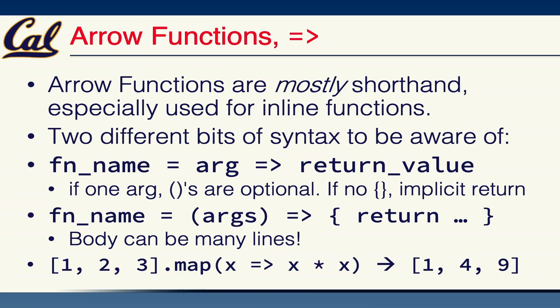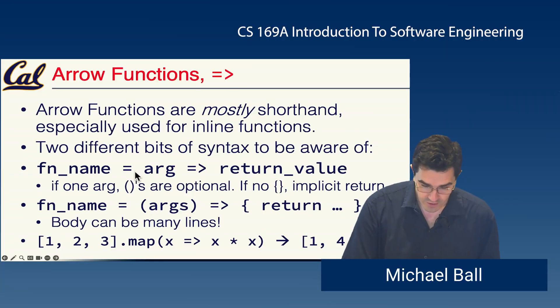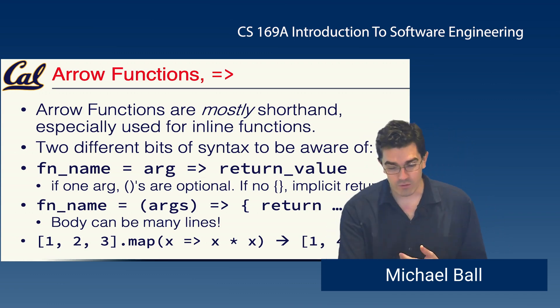Arrow functions in JavaScript are mostly shorthand and they're especially used for inline functions. You'll see lots of places where people now use arrow functions as the default, but there's a few different ways of writing them and there's one sort of big catch to arrow functions that is worth highlighting. In this case, if we want to give the function a name, we say function name equals and the function syntax itself is an argument arrow, sometimes called the hash rocket in Ruby.